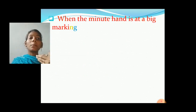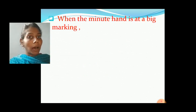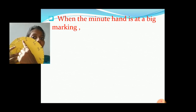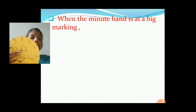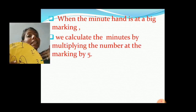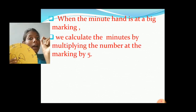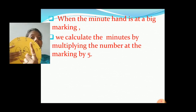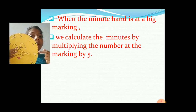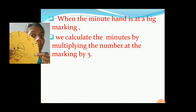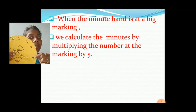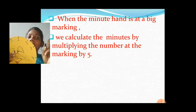When the minute hand is at a big marking, it means these big markings — okay? So that time we calculate the minutes by multiplying the number at the marking by 5. Okay? If at this marking the number is 4, so we will multiply this number 4 by number 5. So 4 fives are 20. So it is 20 minutes.